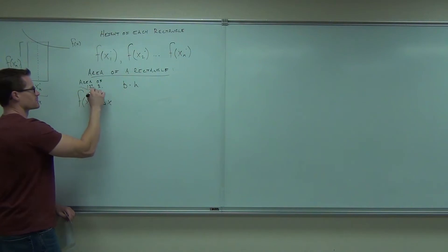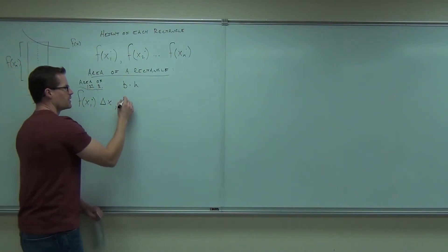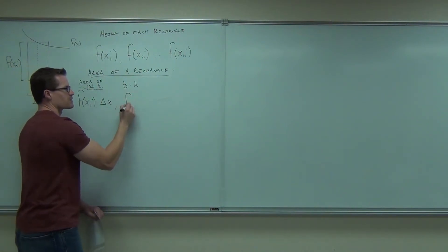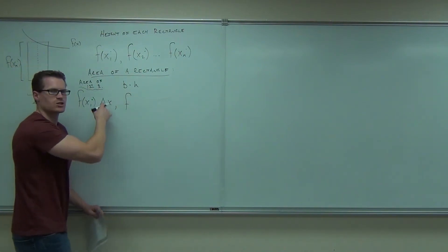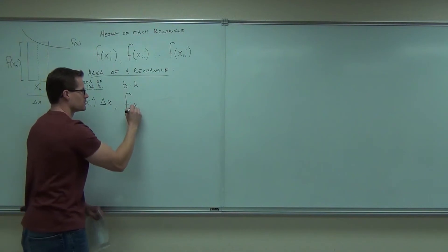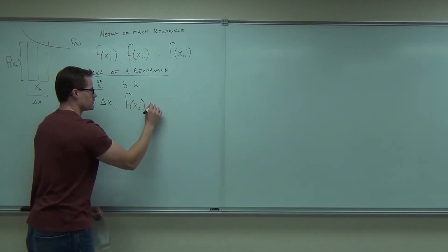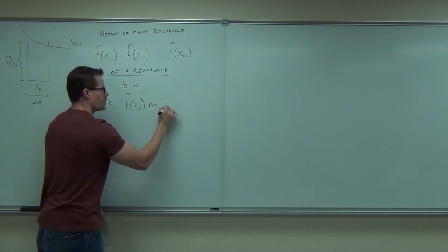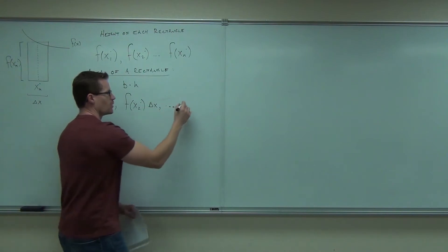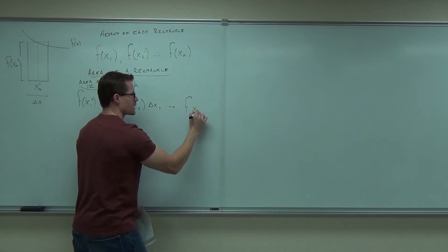That's what this is — the area of the first rectangle. How about the area of the second one? Well, it's still base times height. How about the last one? Well, it's still base times height.